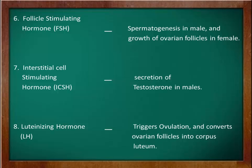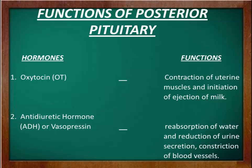That covers the functions of the anterior pituitary gland. Now let's talk about the functions of the posterior pituitary gland. As mentioned earlier, the posterior pituitary does not secrete or produce hormones but stores two types of hormones produced by hypothalamic neurons. The first hormone is oxytocin, which stimulates the contraction of uterine muscles during birth and initiates the ejection of milk from the mammary glands of females.